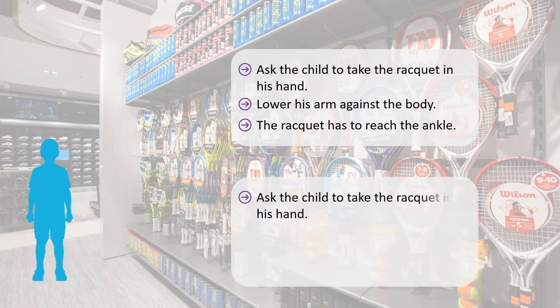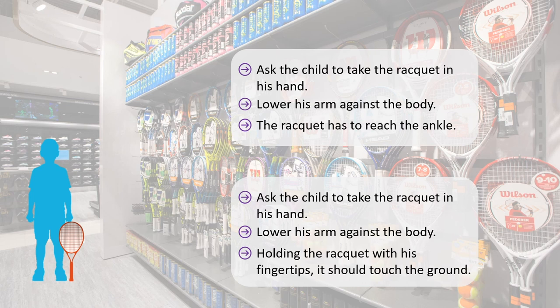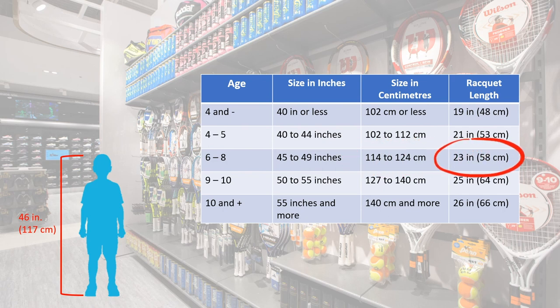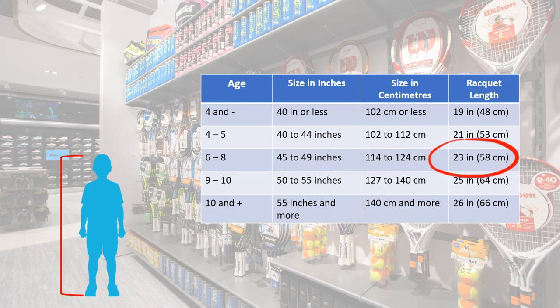In the second method, ask the child to take the racket and lower their arm against their body, holding it with fingertips — the racket should touch the ground. If they have to bend their knees for the racket to touch the ground, it is too short; if they have to bend their arm, it is too long. The third method requires knowing the size of the child, then choosing the racket length from a table. If the child's size for their age does not appear on the chart — for example, the child is 5 and measures 46 inches — choose the racket that corresponds to their size, even if the age does not match.